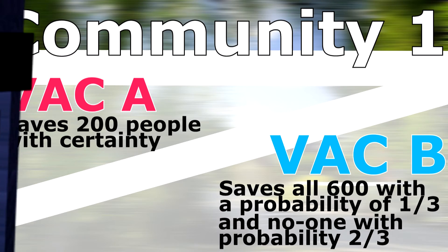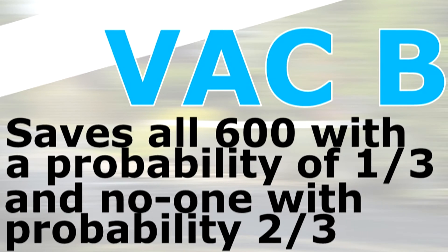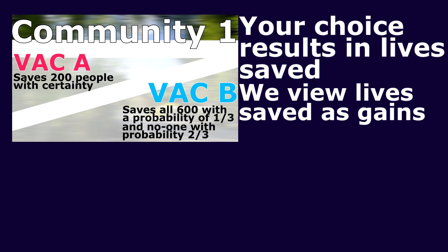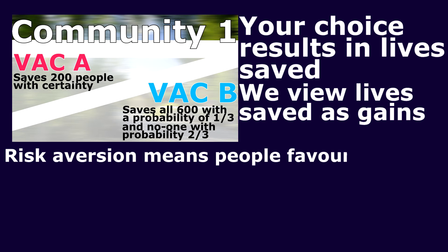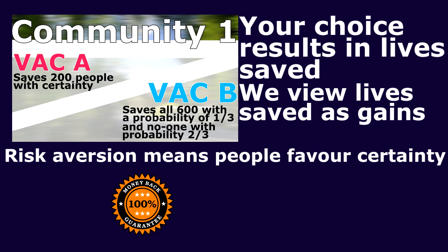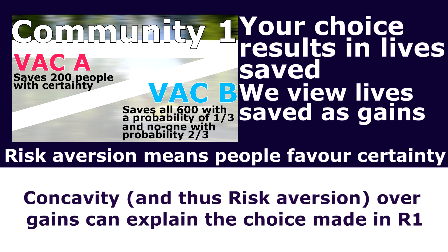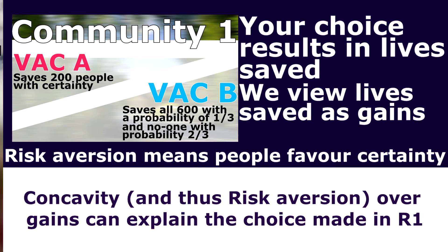In round one, you were made to choose between saving 200 people and saving 600 people with a probability of one third. The question is framed in terms of saving lives, and thus people view each life saved as a gain. Being risk-averse over such gains means people are drawn to the concrete option A — guaranteed to save 200 people — over the risky option B, where they may save everyone or no one. This may explain why 72% chose A, and why I, and possibly you, chose option A as well.